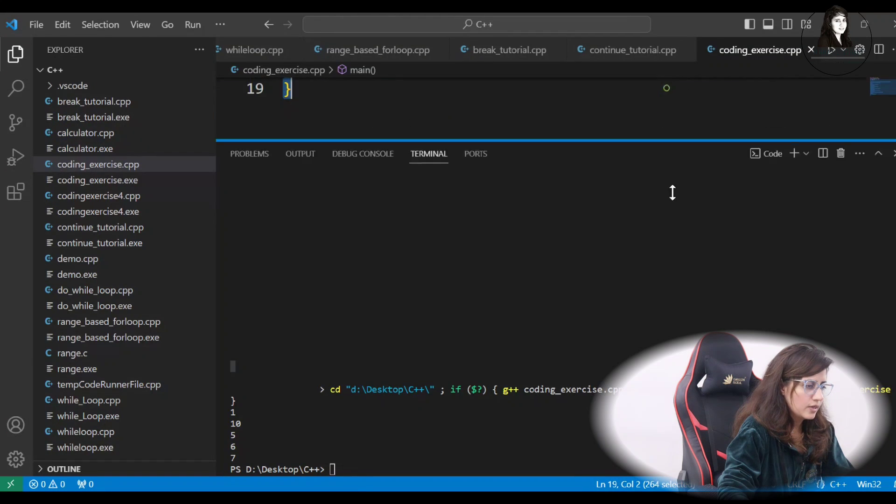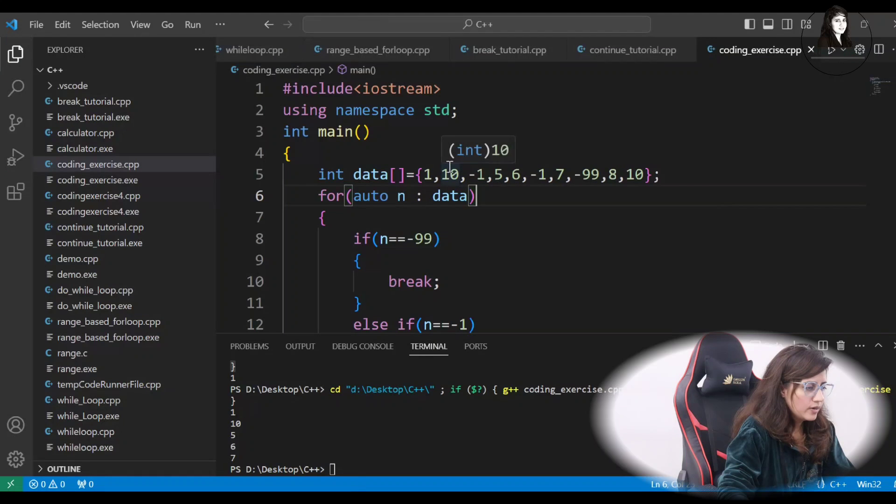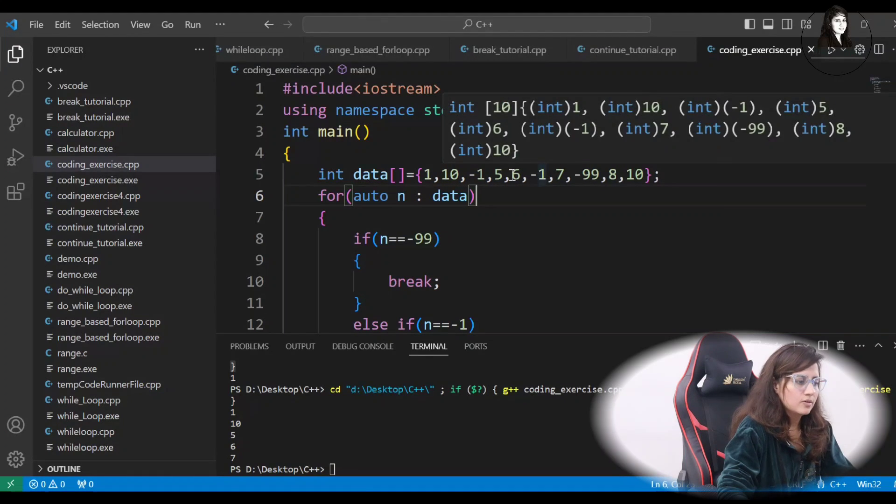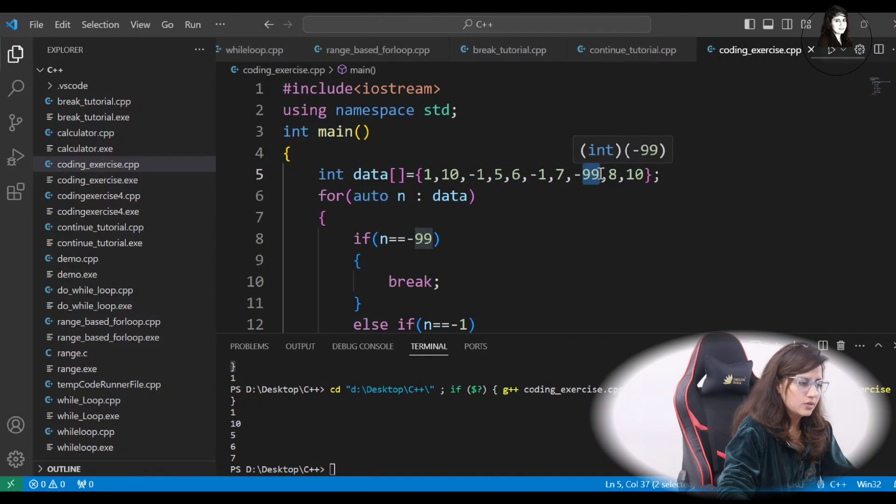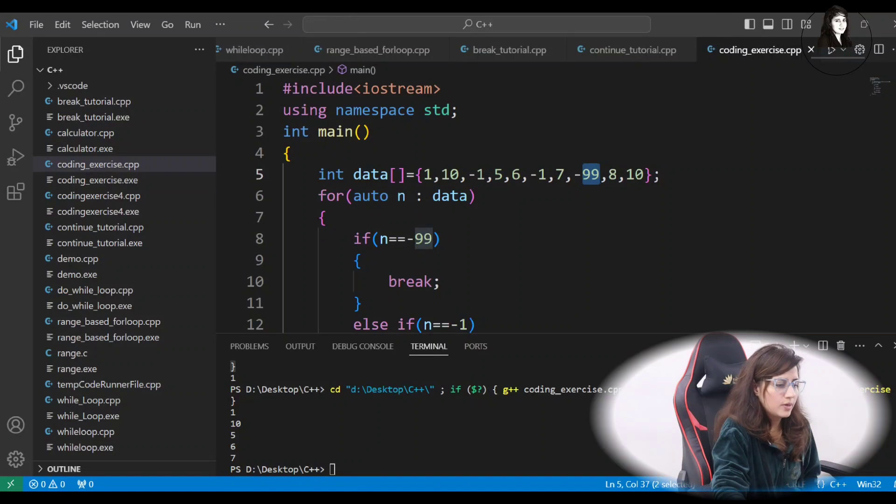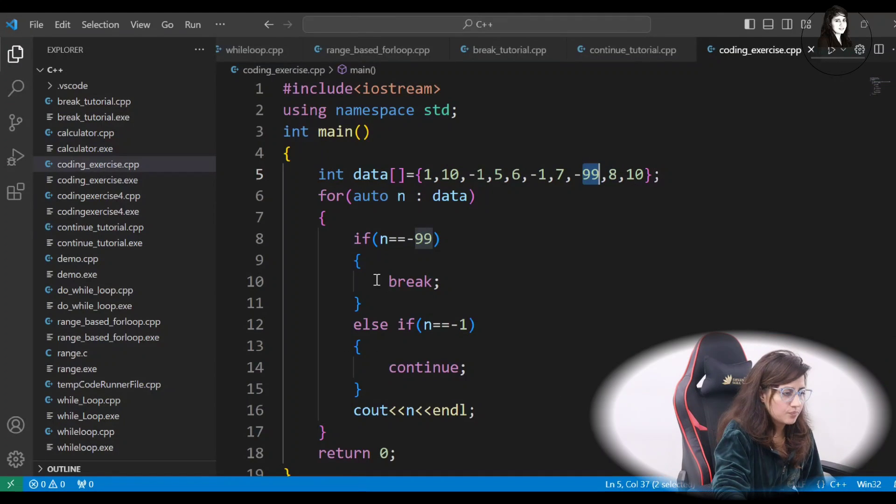It should be printed like this. 1, 10, 5, 6, 7. No minus 1. And once it reached to minus 99, just stop printing or stop processing the data.